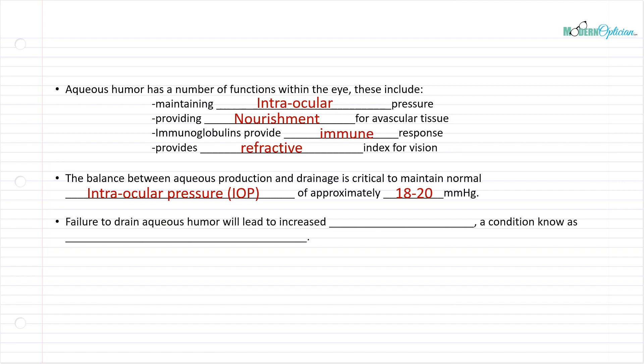Failure to drain aqueous humor will lead to increased IOP, a condition known as ocular hypertension. Sometimes we hear about cardiovascular hypertension, increased blood pressure. Very similar. Increased eye pressure is referred to as hypertension. Is it glaucoma? Not necessarily yet.